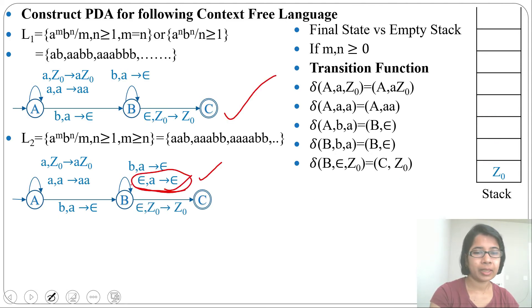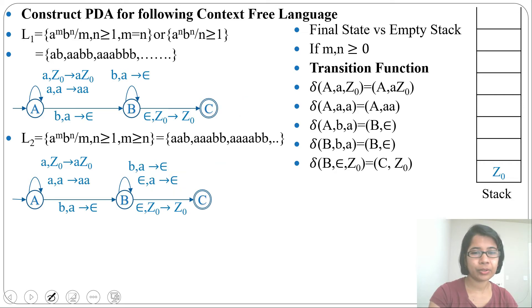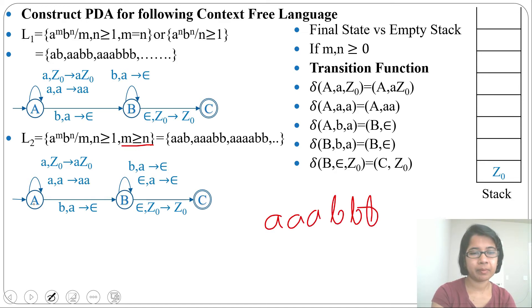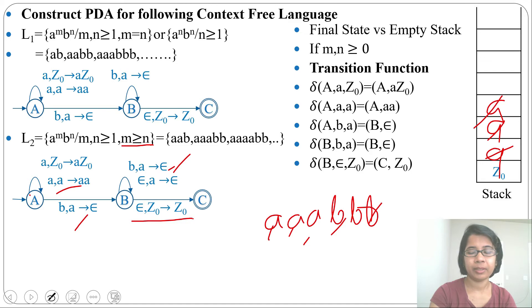After popping the extra a's using ε transitions, the topmost symbol is Z0, so by ε we skip Z0 and go to the final state. The rest is the same as the a^n b^n PDA. It can also accept equal numbers of a's and b's without using the ε-pop-a transition. So this PDA accepts m ≥ n: if m > n it uses the extra ε-pop transition; if m = n it does not.